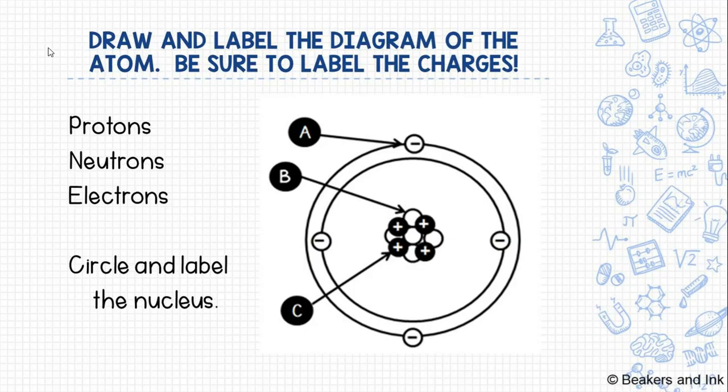A is pointing to the negatively charged particle in the electron cloud. A would be electrons. B is pointing to the circle that is empty in the nucleus. Because it's empty, that means it does not have a positive charge, and it does not have a negative charge. That means it is neutral. It has no charge. So B would be the neutron. C is pointed to the positively charged particle in the nucleus, which is our proton. Lastly, if you circled that center part of the atom and labeled that, that is your nucleus.